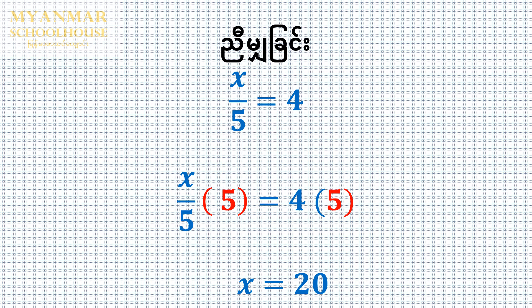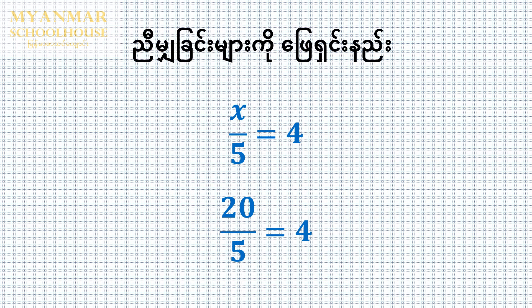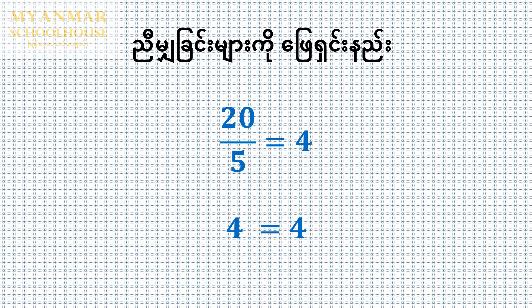4 times 5 is 20. The 5 and 5 cancel out. The equation gives x is equal to 20. Checking: 20 over 5 is equal to 4, and 5 times 4 is equal to 20.